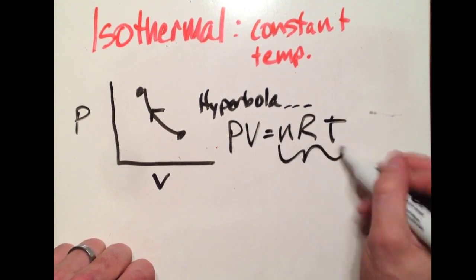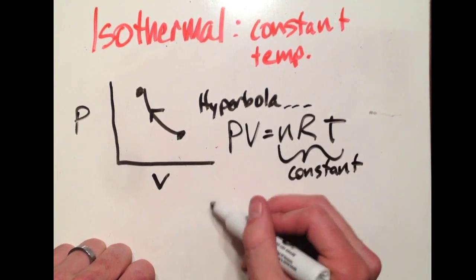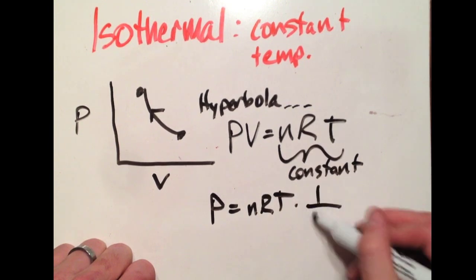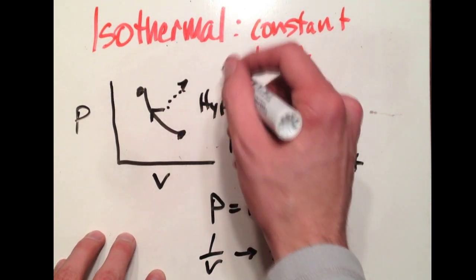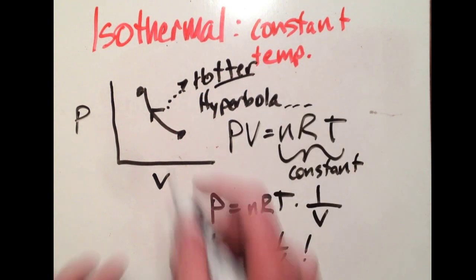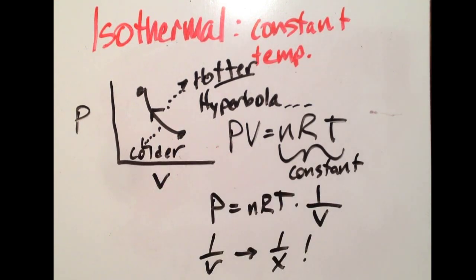The only thing that would change would be the arrow direction, not the concavity. The reason being, nRT is now constant. You are, in a sense, graphing one over V, which is like graphing one over X. The hotter you get, the further out from the origin your isotherm would be.